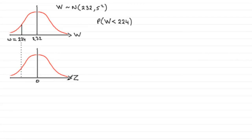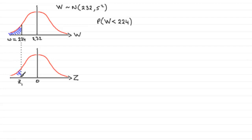The standardized curve measures the number of standard deviations the observed value is above or below the mean. You can clearly see 224 is below the mean. We call this standardized value z1. The probability that W is less than 224 is represented as the area to the left of 224, which is exactly the same as the area to the left of z1 — that is, the probability of being less than z1.